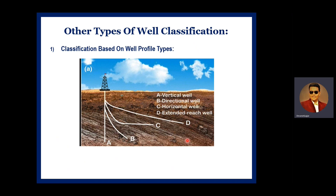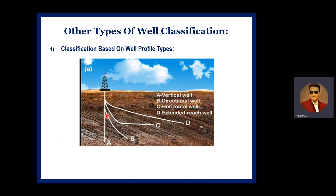Wells are classified by trajectory into vertical wells, directional wells, horizontal wells, and extended reach wells — where the horizontal section is very long compared to the vertical section, typically in a ratio of 2:1. A vertical well has no deviation. A directional well is used when the prospect is beneath an urban area, when fishing has occurred, or to gain more reservoir exposure. Horizontal wells are especially used in coalbed methane reservoirs to maximize reservoir exposure.